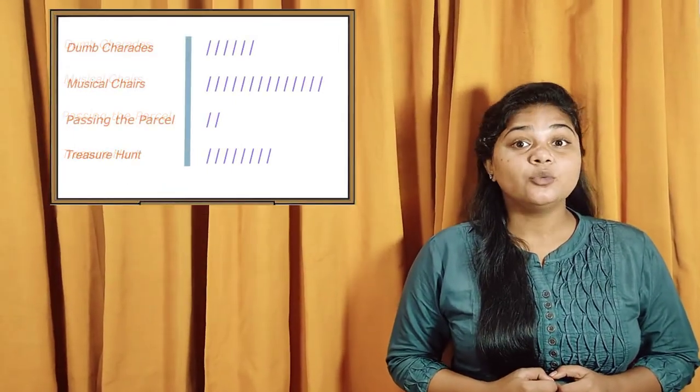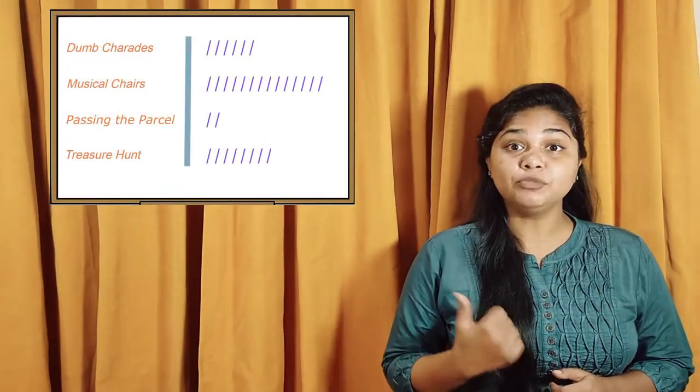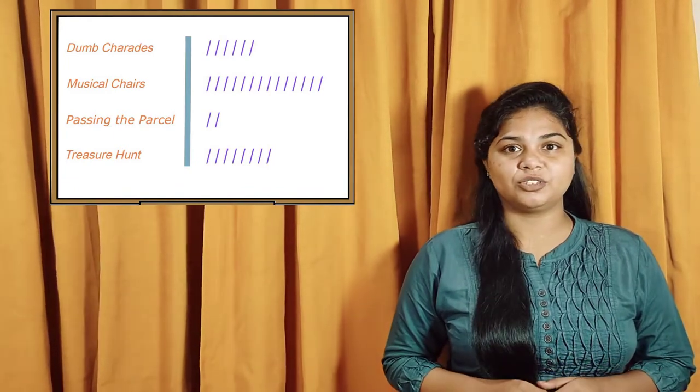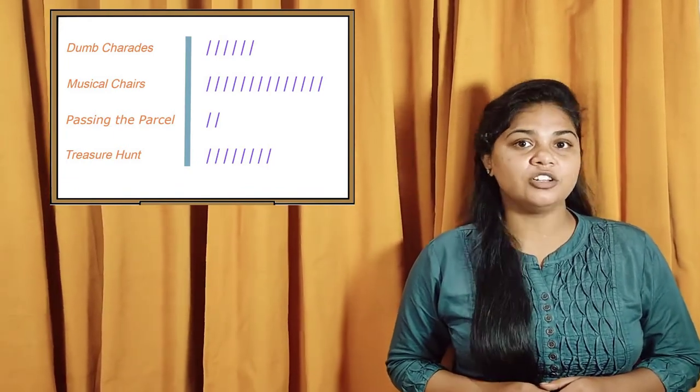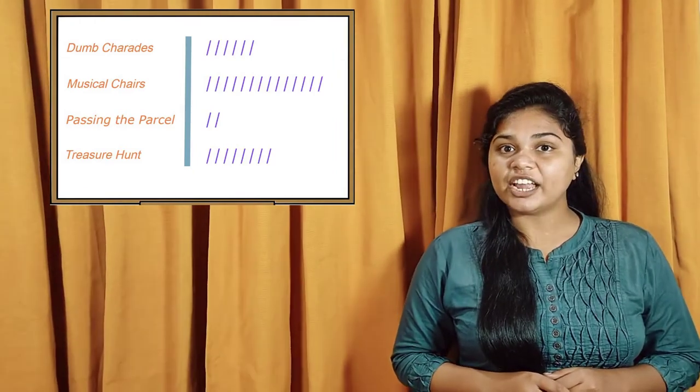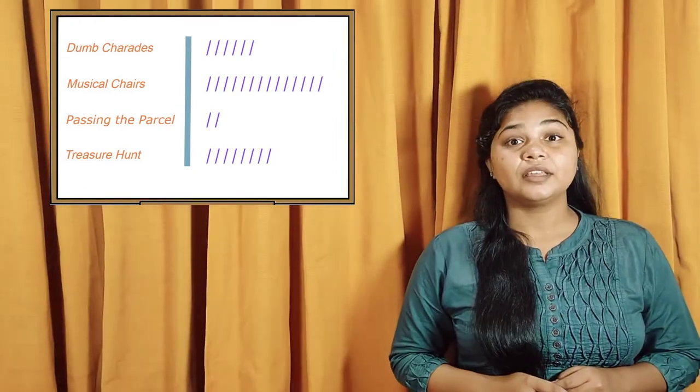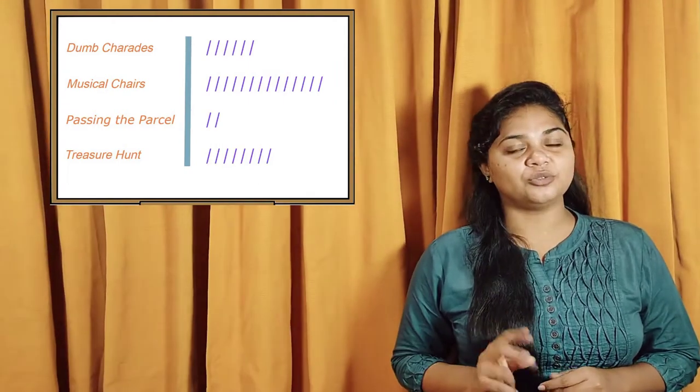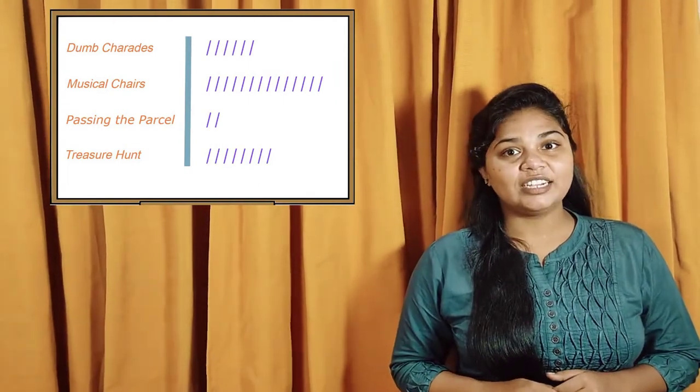Once everyone is done, we see that the tally marks for the musical chairs appears to be the most. To be sure, we also count. Dumb charades has 6 tally marks, musical chairs has 14, passing the parcel has 2 and treasure hunt has 8.